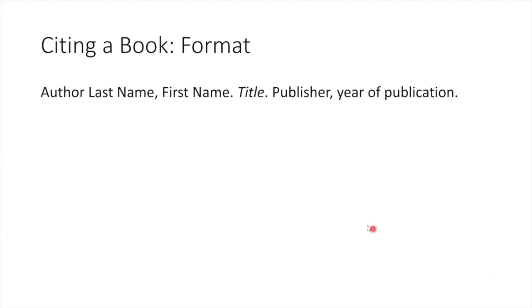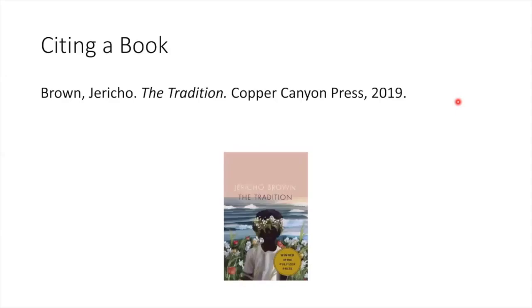Books are the simplest type of source to cite. All you need is the author's last name, followed by a comma, and the author's first name. A period comes next. Add the title of the book in italics, followed by a period. Next, you'll need the publisher's name — this can usually be found in the first few pages of the book — followed by a comma, and then the year of publication, followed by a period. Here's an example. This is Jericho Brown's book of poetry, The Tradition, which won the Pulitzer Prize in 2020. You'll notice in my citation, I've plugged in all the required elements: the author's last name, comma, first name, followed by a period; the title of the book with all the important words capitalized, followed by a period; the publisher's name, followed by a comma, and the year of publication. It's that simple.